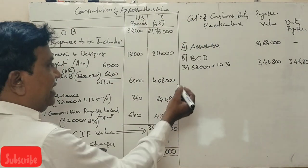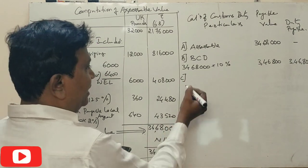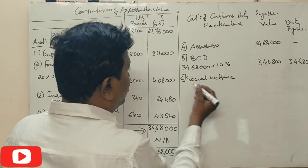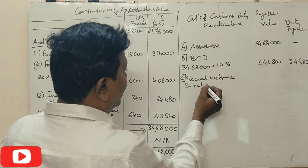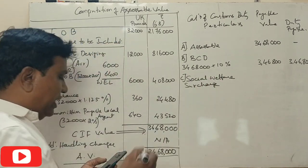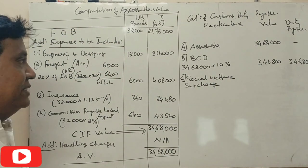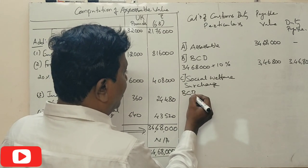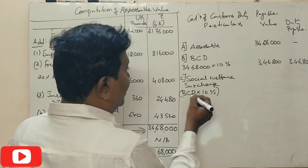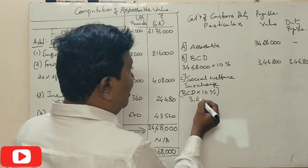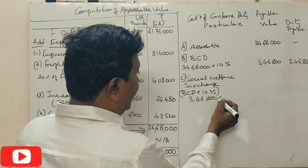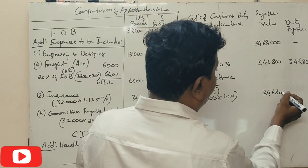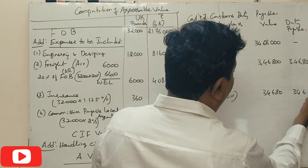Point C, social welfare charges or surcharge. Basic customs duty 10%, BCD is 3,46,800. 10% is 34,680.